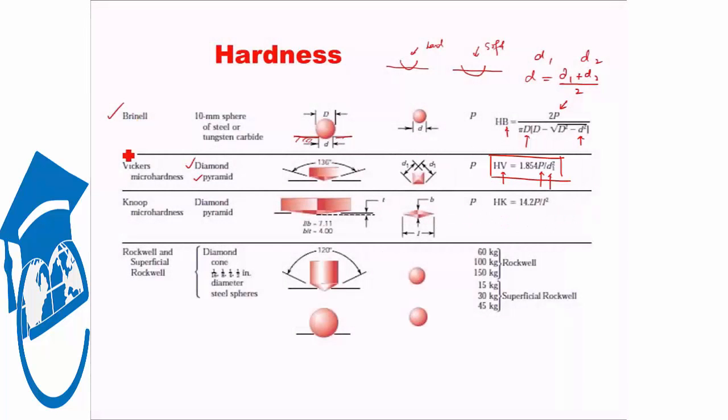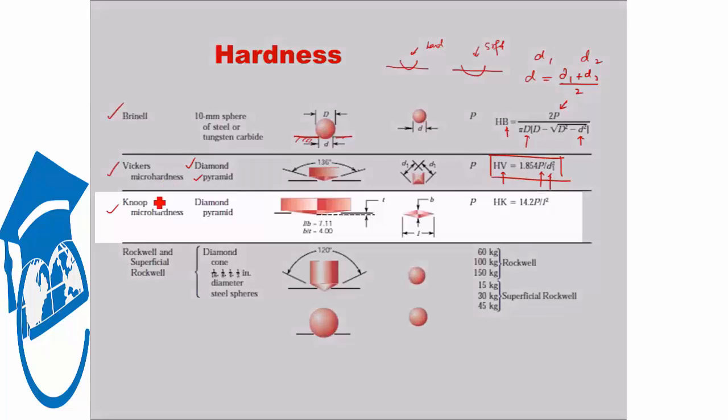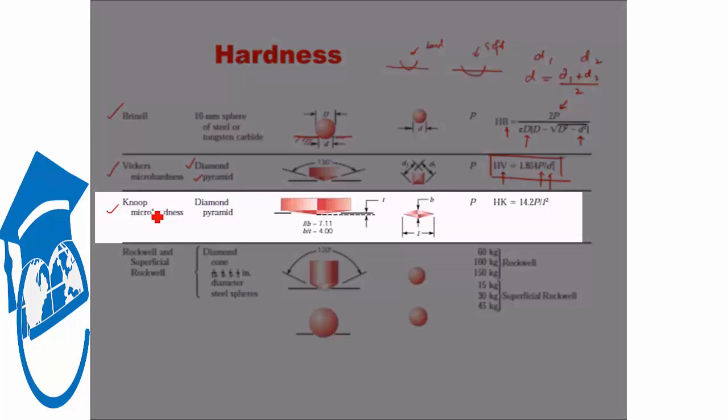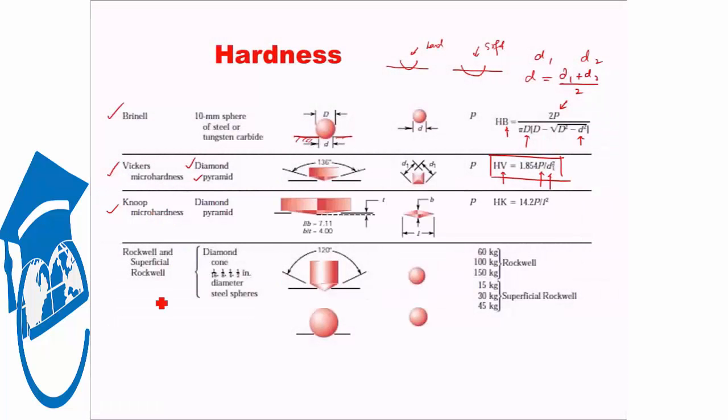Now that we have seen Brinell and Vickers hardness, let's see Knoop's micro hardness. Vickers can be hardness or micro hardness depending on how large load we are applying. If the specimen is very fragile, we apply a very small load, one gram, two gram. If the material is quite tough like steel, we can apply 500 grams or one kg. At that time we don't really call it micro hardness, we call it Vickers hardness.